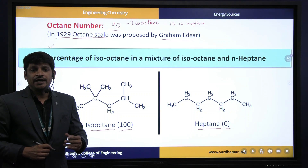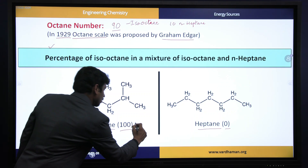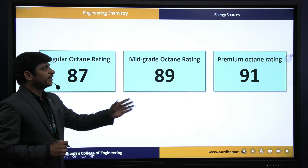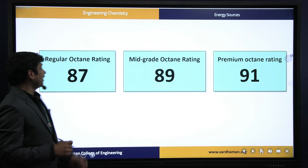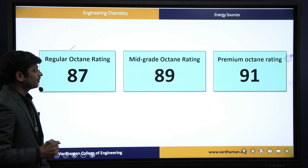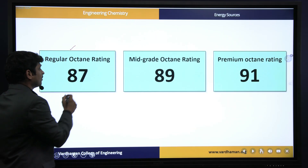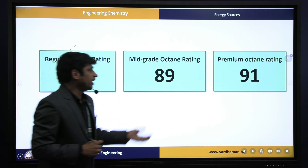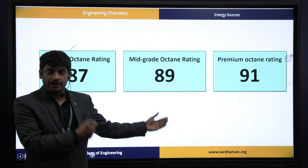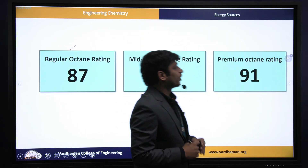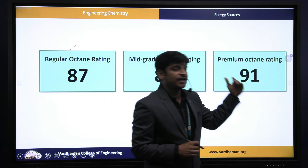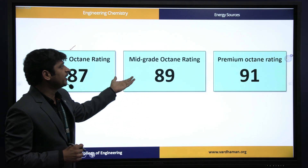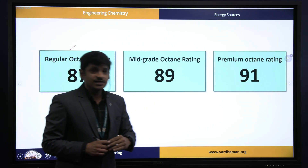The percentage of isooctane is used to rank petrol. There are three different octane ratings: regular octane rating is 87 (meaning 87% isooctane), mid-grade octane rating is 89 (89% isooctane, remaining n-heptane), and premium octane rating is 91 (91% isooctane). So regular is 87, mid-grade is 89, and premium is 91.